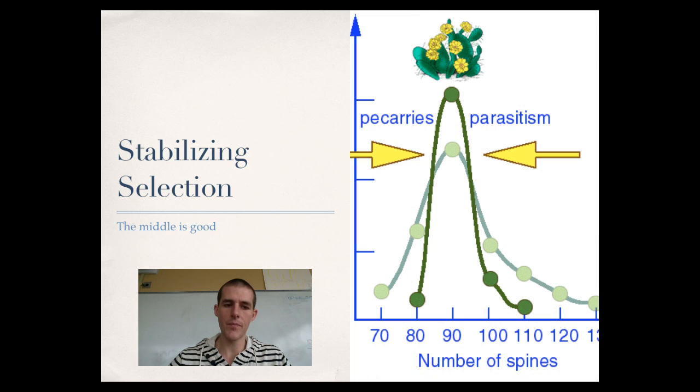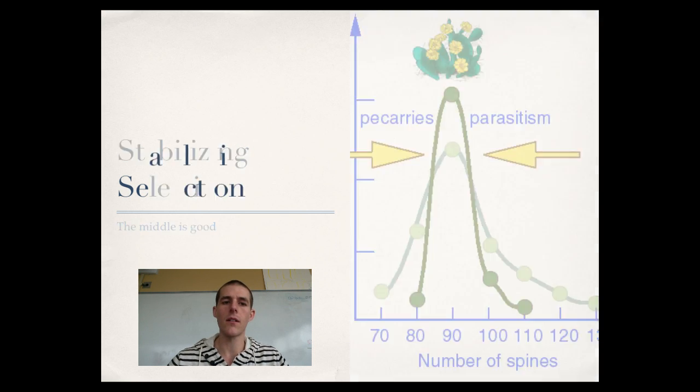And finally, we have stabilizing selection. In stabilizing selection, the mean becomes the best place to be. You can see there the small, faint green graph on the bottom. Over time, you've got selection from peccaries eating them. So those plants want to have more spines, but the ones that have too many spines are subject to parasitism. So most of the population is going to become squeezed such that they sit in that middle range. Be able to recognize situations where a population might move in a directional, disruptive, or stabilizing direction.